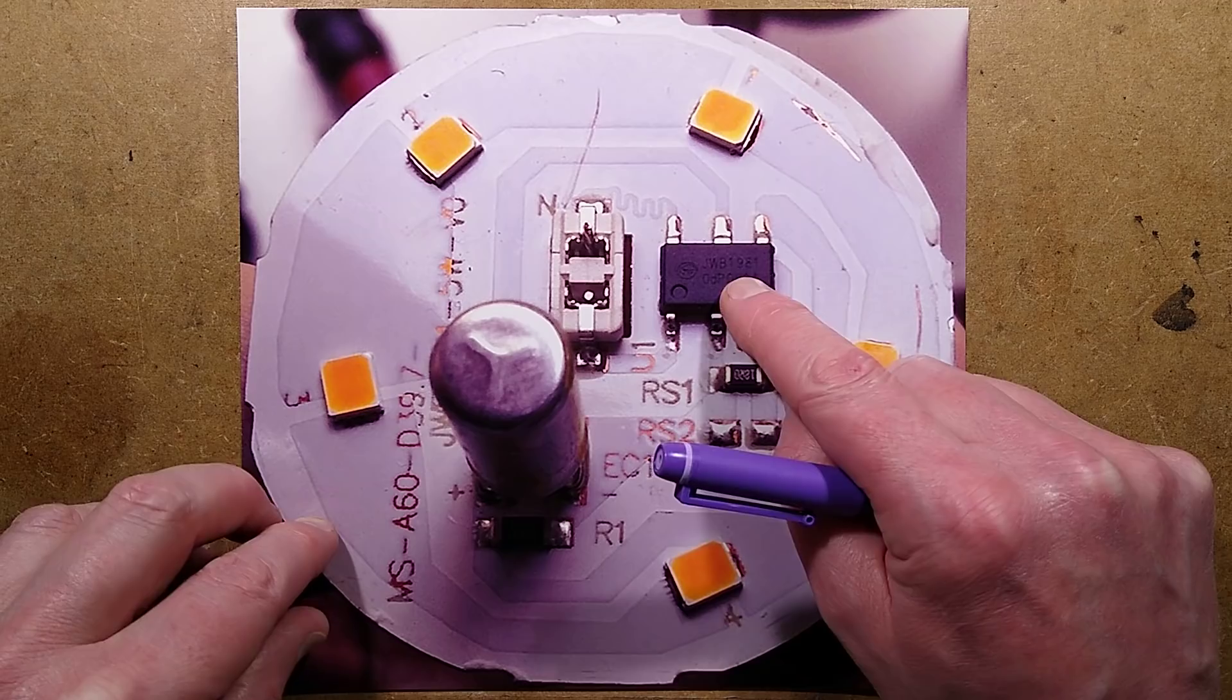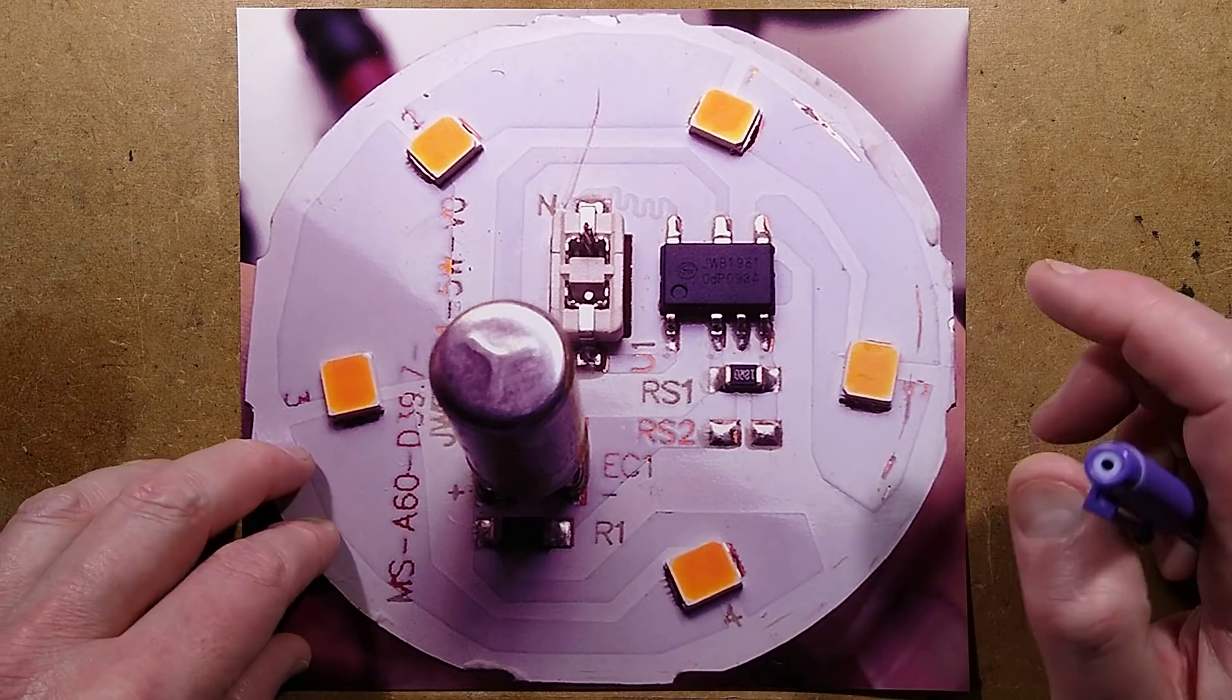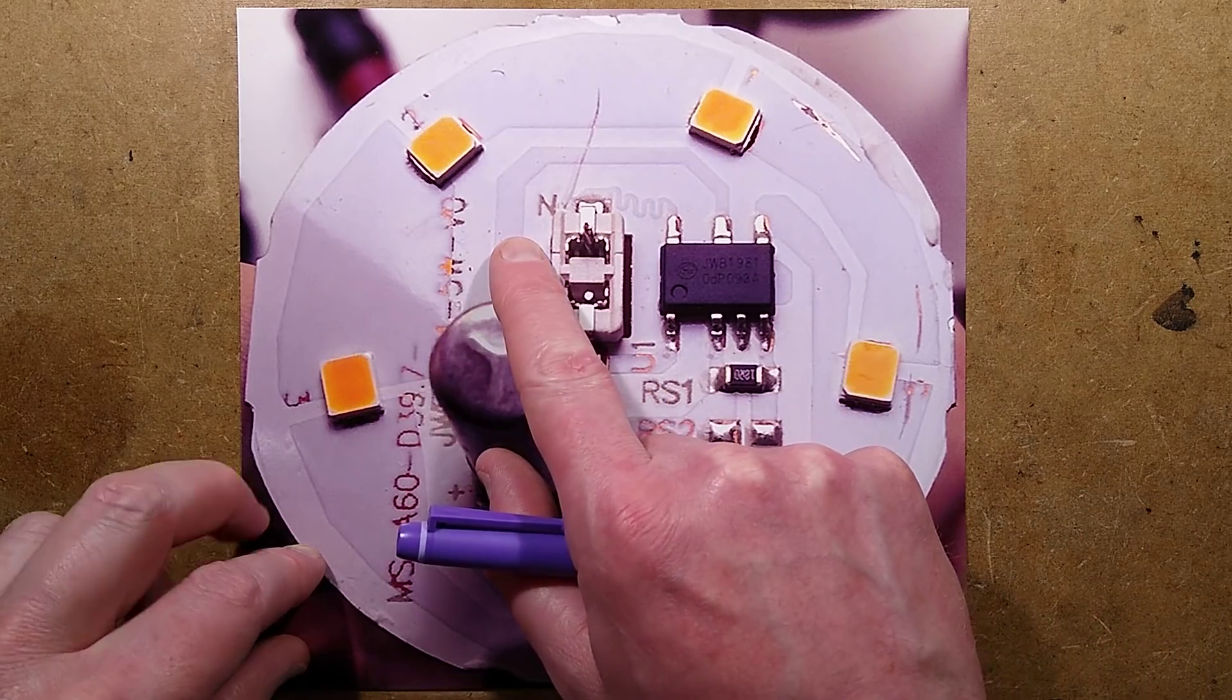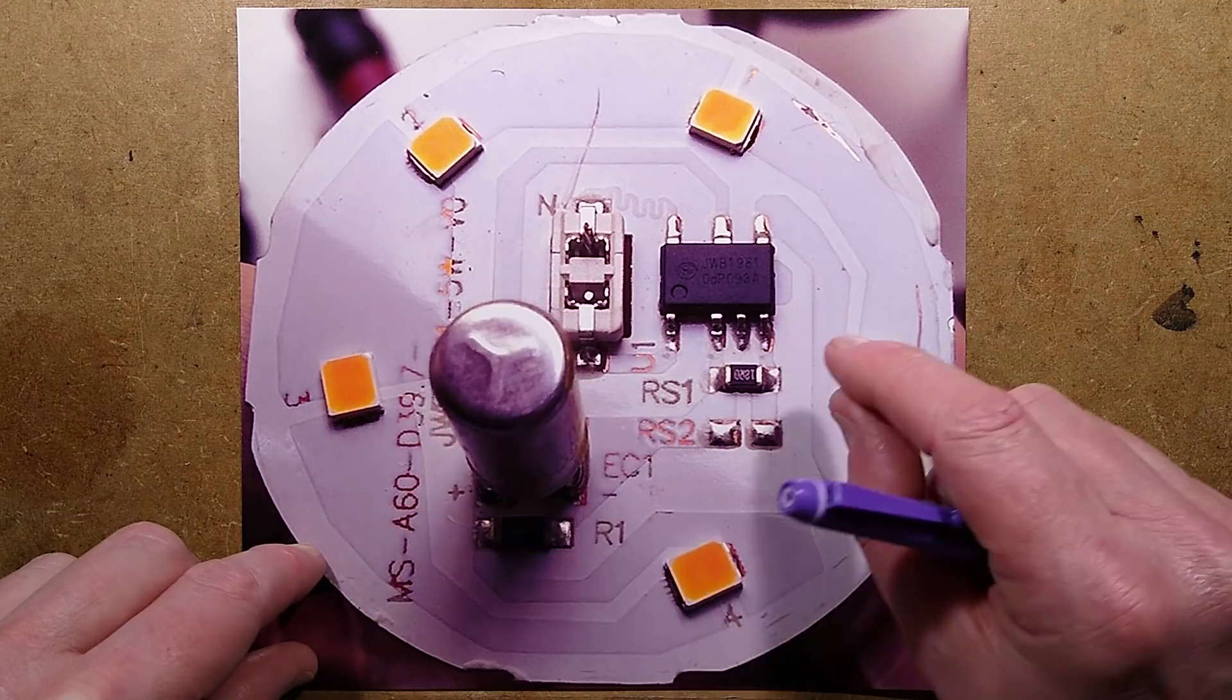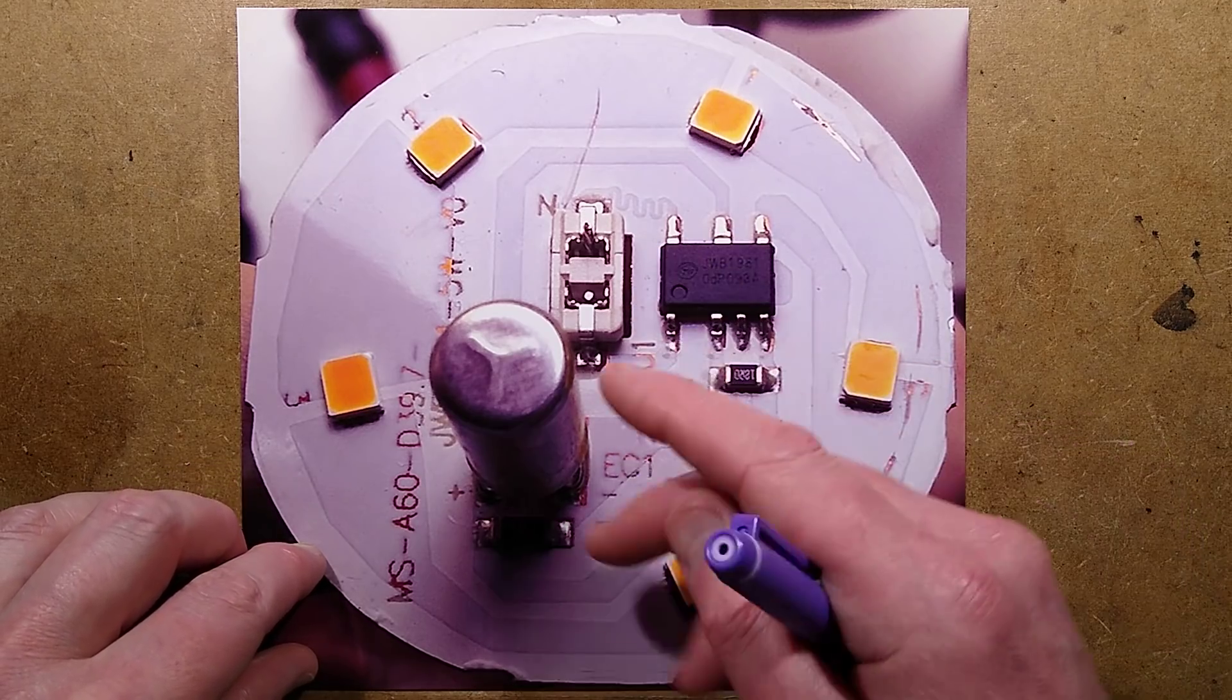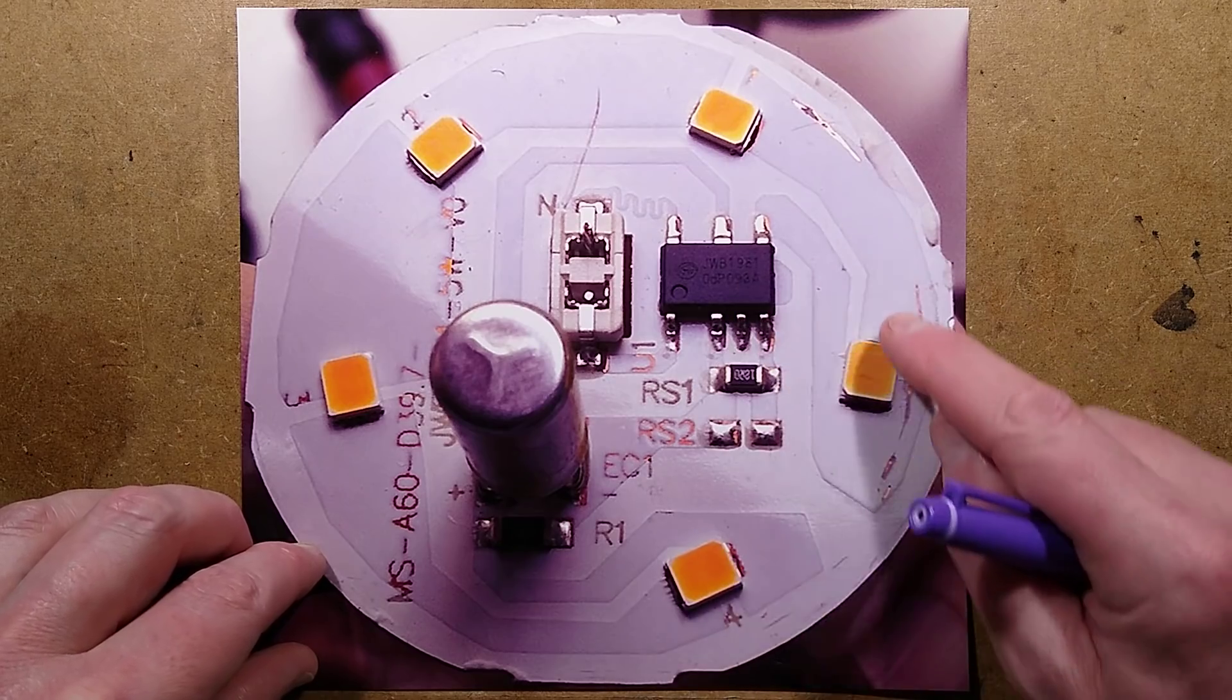There's no data sheet available for this chip, but we can kind of work out what's actually involved here. The one thing that seems to be missing off this circuit board is a bridge rectifier. And that's because this chip appears to be doing the bridge rectification from the AC to the DC, and also the current regulation through the LEDs.